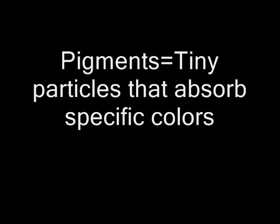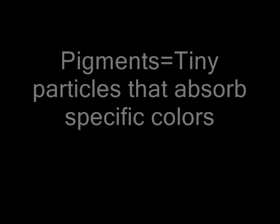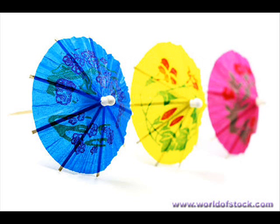Pigments are tiny particles that absorb specific colors. You have to know the subtractive primary colors. They are magenta, cyan, and yellow.